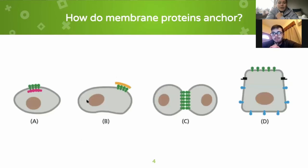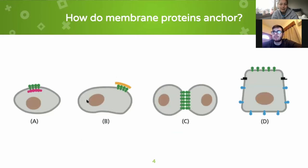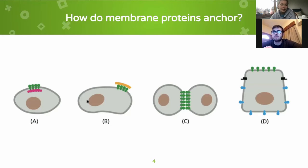So how do membrane proteins actually anchor down? To prevent this lateral movement, membrane proteins are restricted to a particular membrane domain, which is a specific area within the phospholipid bilayer. Thus, how can we restrict these proteins to a specific region in the membrane?